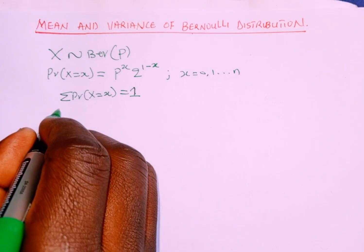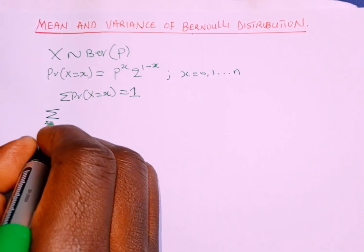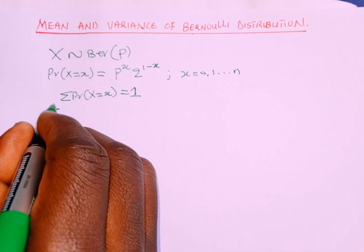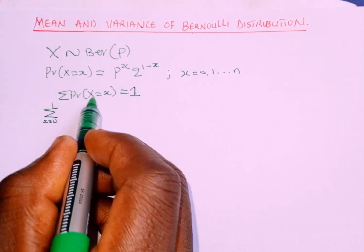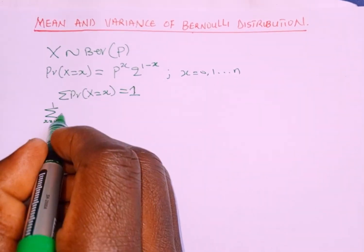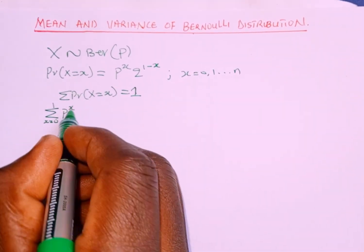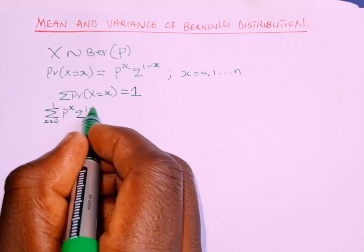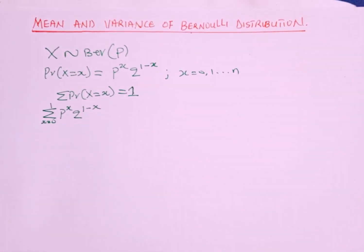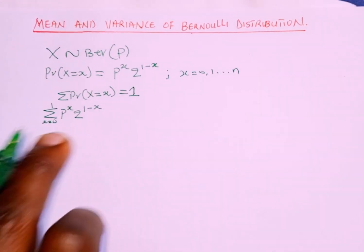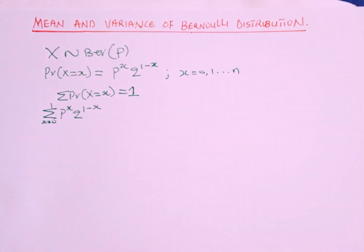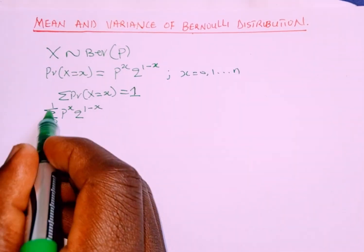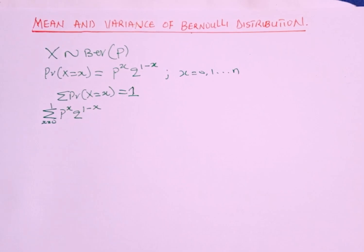We will find the sum, as x goes from 0 to 1, of the function — probability of X equals x — which is p^x · q^(1−x). To find the summation, anywhere we see x we replace with 0, then plus, anywhere we see x we replace with 1. That is, at x equals 0 and at x equals 1.